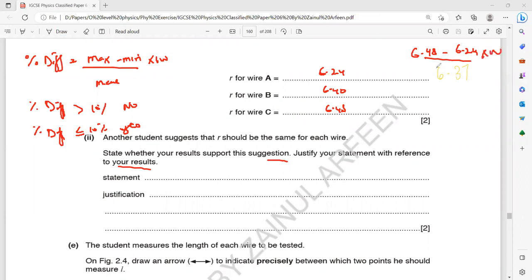When you subtract, 6.48 minus 6.24, which is 0.24, divided by 6.37 into 100. So what percentage difference is coming out? What's the percentage difference? How much when you solve? 3.76.